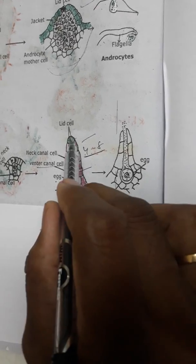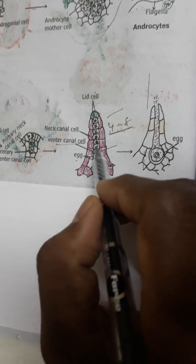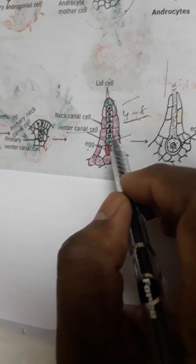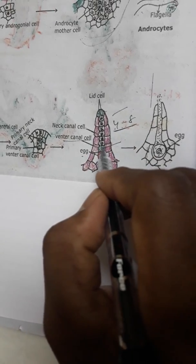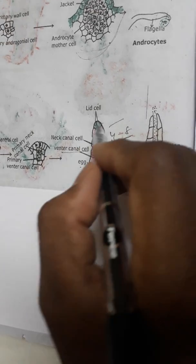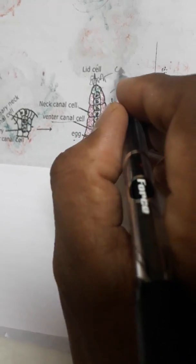Ventral canal cell is one. Lid cells are four. When matured archegonium, before the fertilization, all these neck canal cells disintegrate along with ventral canal cell. These all cells disintegrate to form mucilage and release one chemical, that is citric acid.